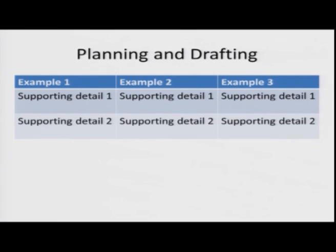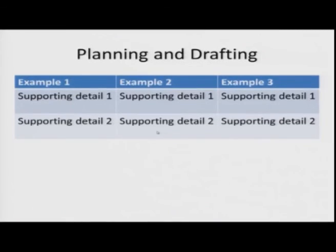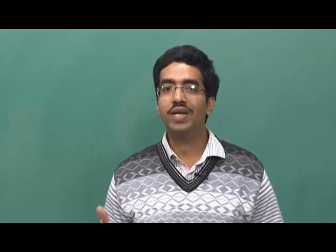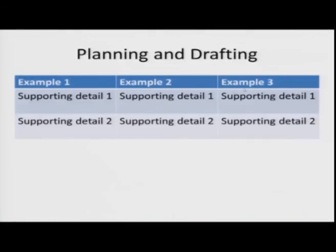When you are planning and drafting, the general structure is: state your main point, then provide supporting details under each example. In the risk-taking text, the writer uses only one example. Sometimes you may want to use more than one example. In that case, paragraph 1 covers example 1 with supporting details, paragraph 2 covers example 2, paragraph 3 covers example 3, and so on.